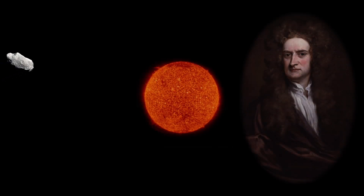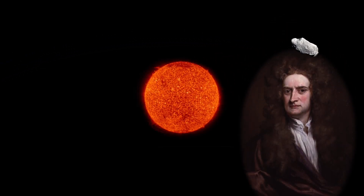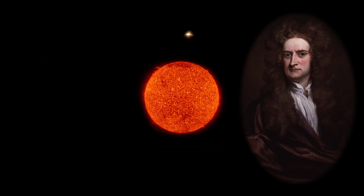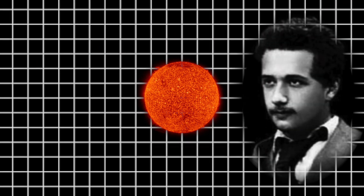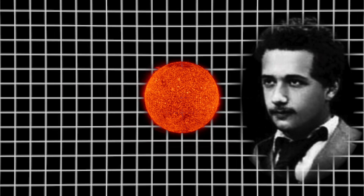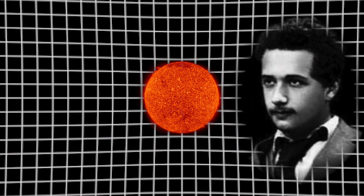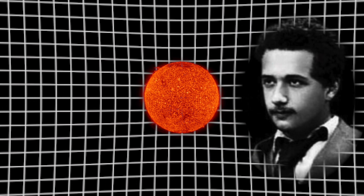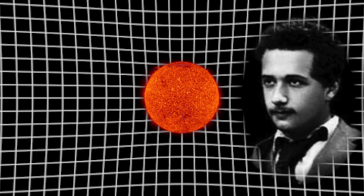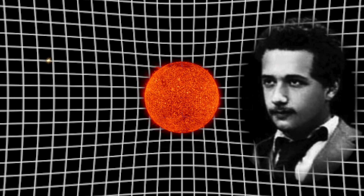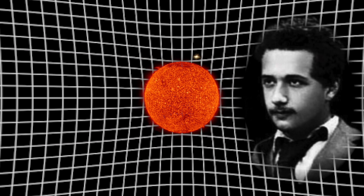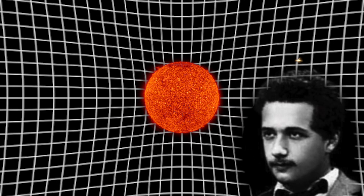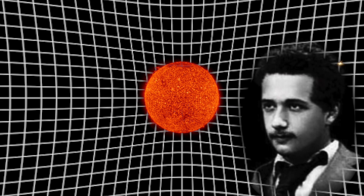Crucially, Newton's gravity only affects massive objects, and thus doesn't apply to light, which has no mass. However, in Einstein's theory, gravity curves space-time, and it is the curving of space-time that affects the motion of objects. But since light travels through space-time as well, the curving of space-time will affect light as well, and therefore light is bent near the Sun.